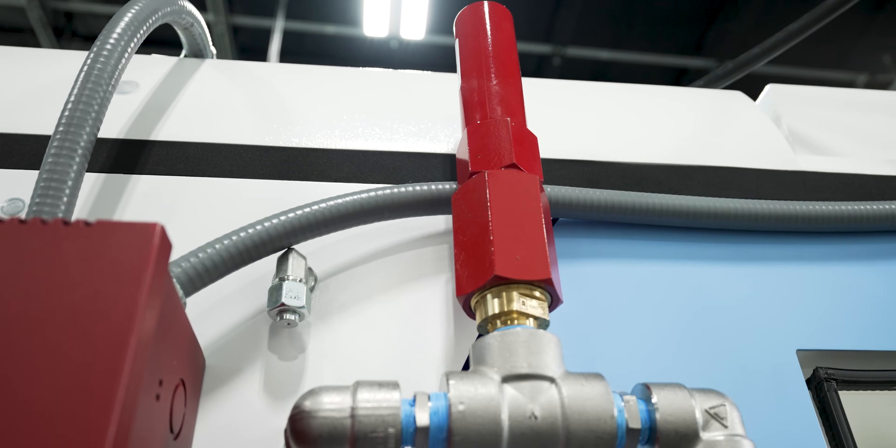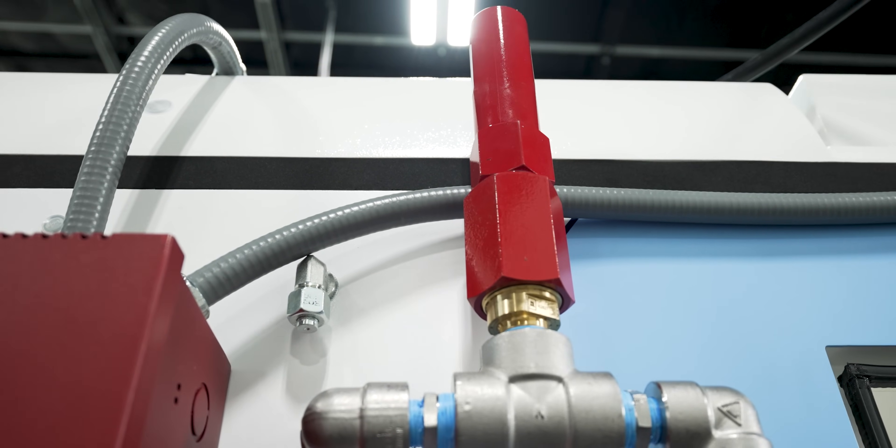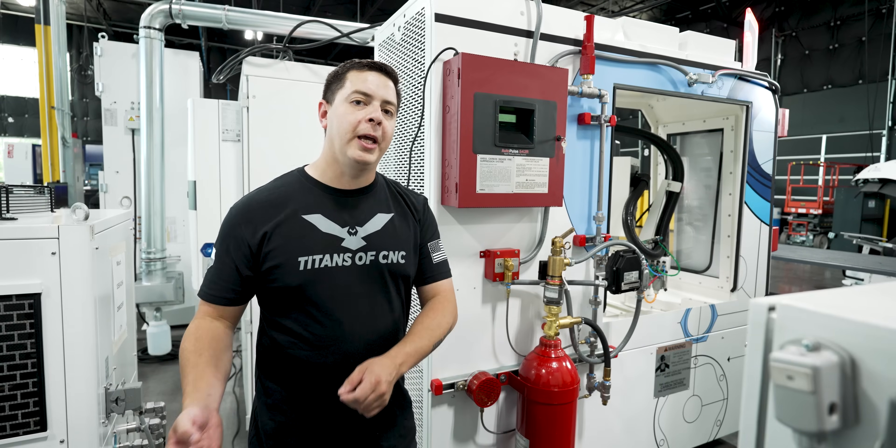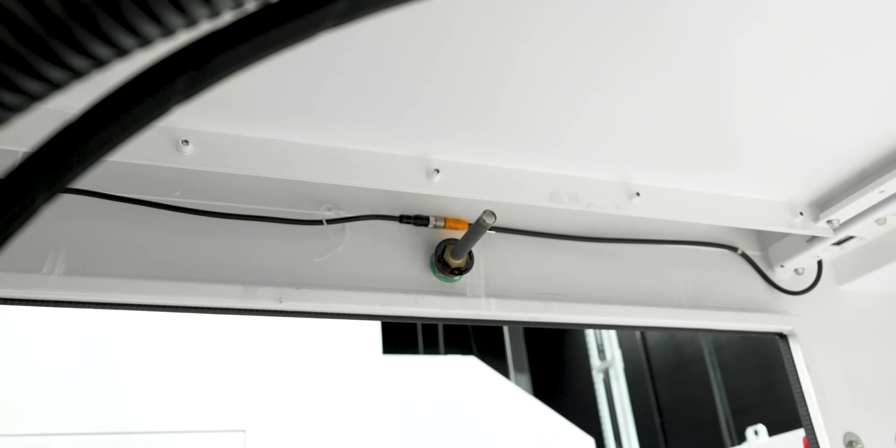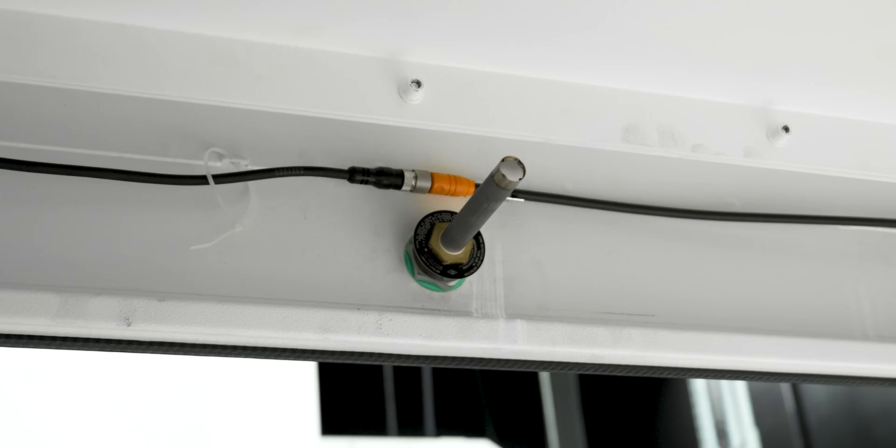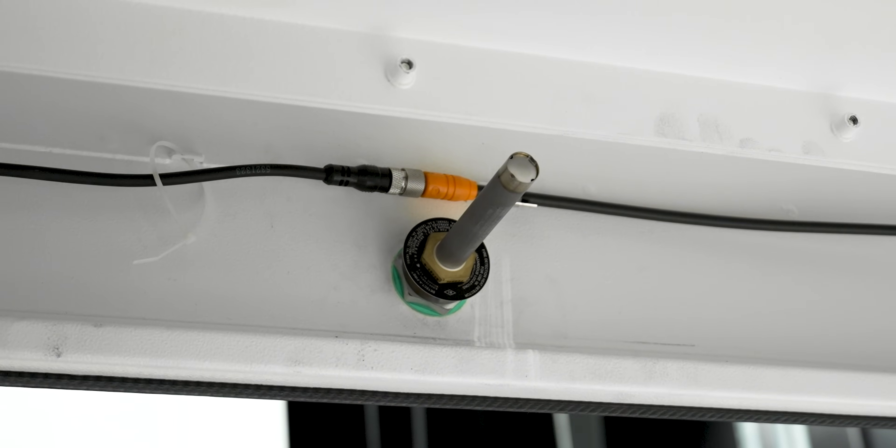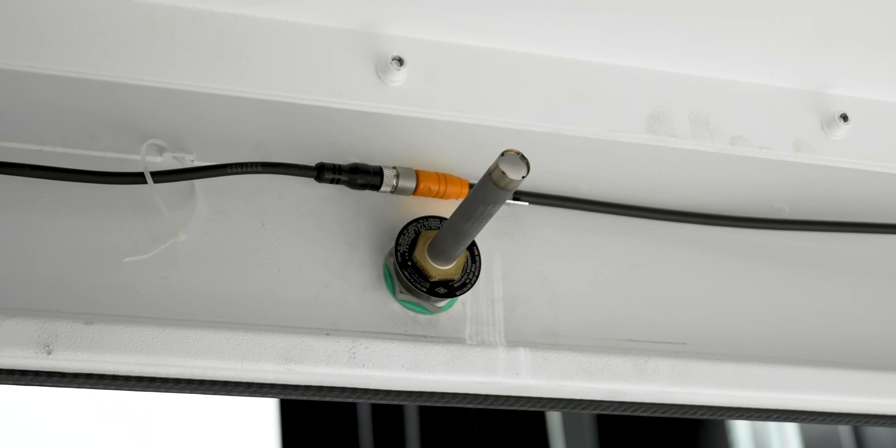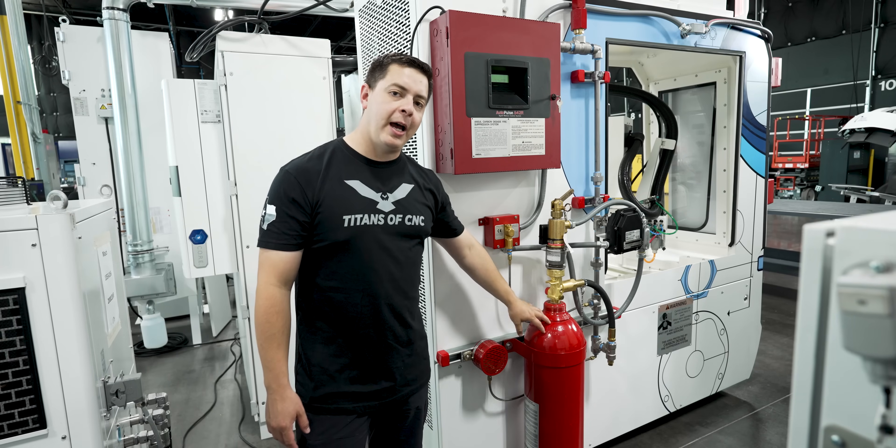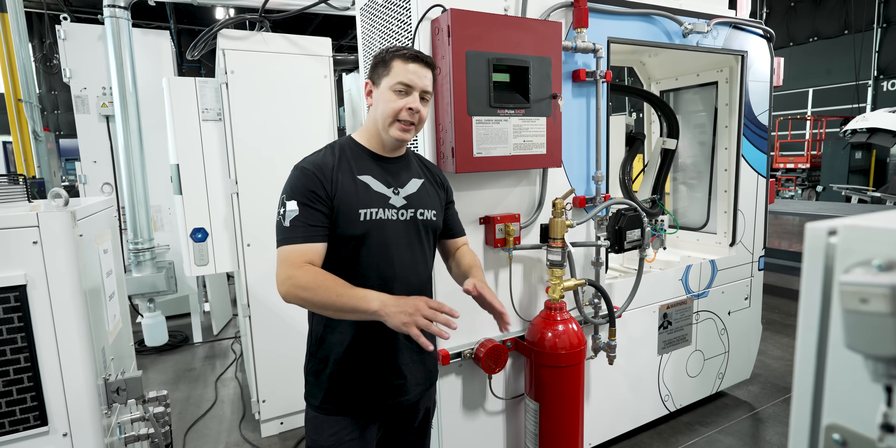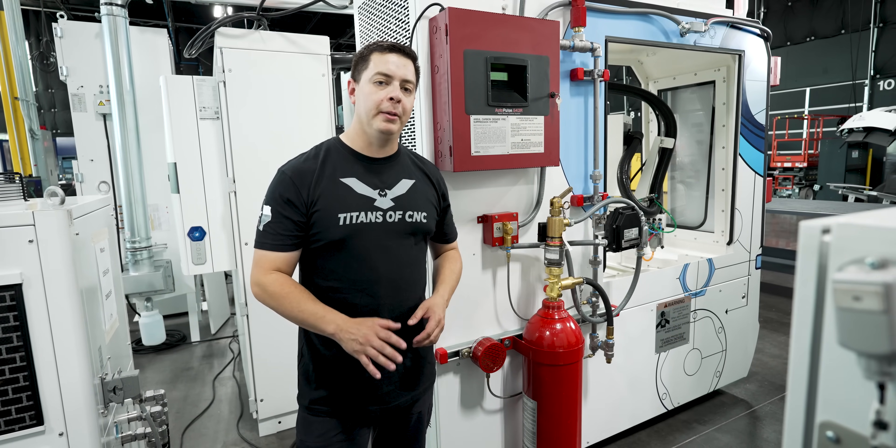Now that's kind of funny but what it's for is to make sure that if it's leaking you can actually smell it similar to how they put the egg smell in propane. Inside the machine it has a heat probe. Once that heat probe gets up to 195 degrees Celsius it sends an alarm out and it's going to pump this entire tank of carbon dioxide into the machine suppressing any existing flames.